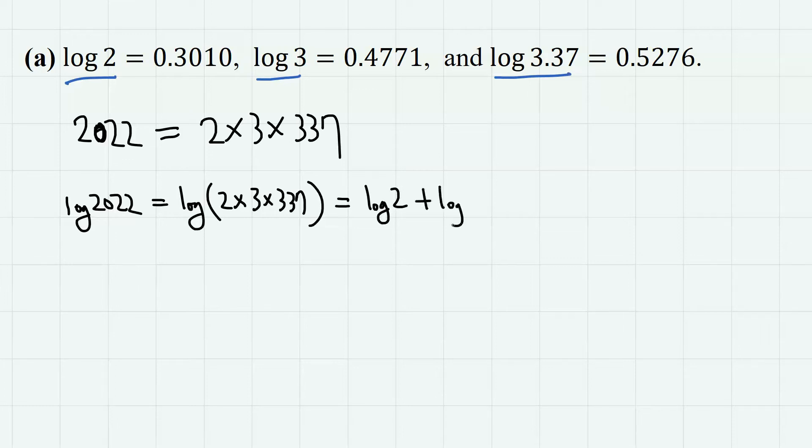So log 2 plus log 3 plus log 337. Here, 337 is actually 100 times 3.37, so we can split this into log 3.37 and log 100, which is 2. For the rest, the values are given.